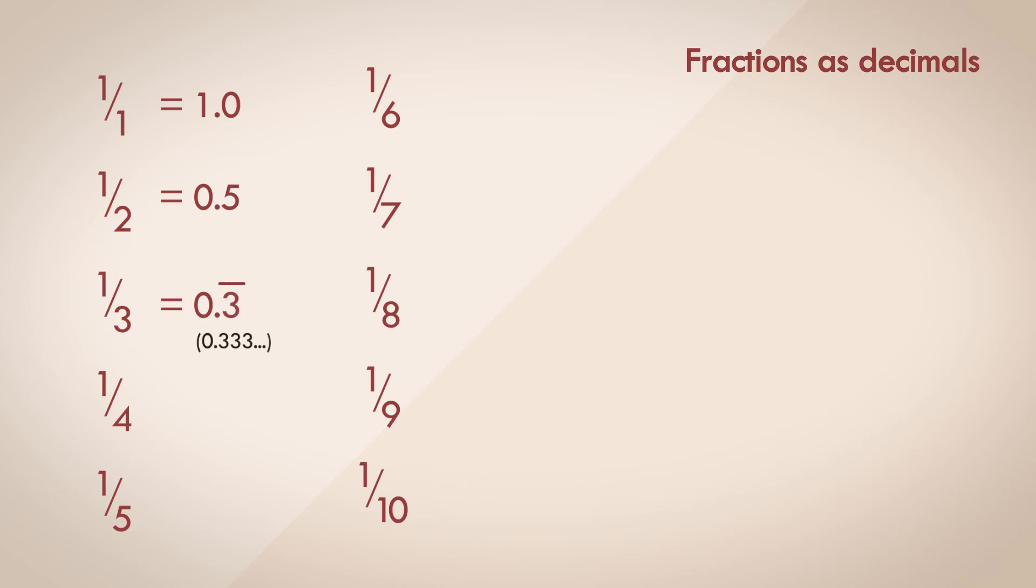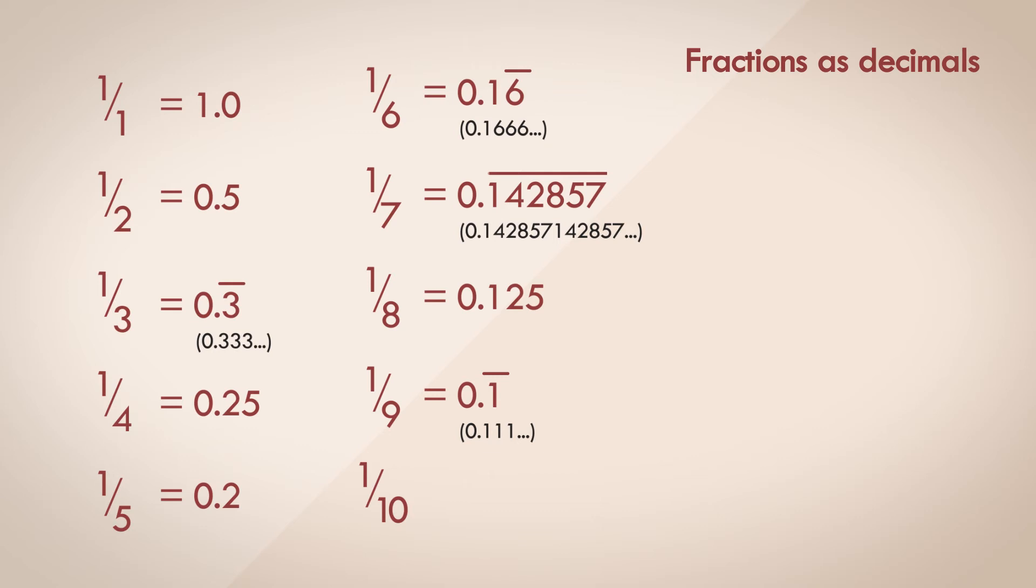Let's consider a few basic fractions. The numerator is always 1, and the denominator goes from 1 to 10. Let's quickly represent these fractions as decimal numbers. One half is 0.5, one third is 0.3 recurring, one fourth is 0.25, one fifth is 0.2, one sixth is 0.16 recurring, one seventh is 0.142857 recurring, one eighth is 0.125, one ninth is 0.1 recurring, and one tenth is 0.1.